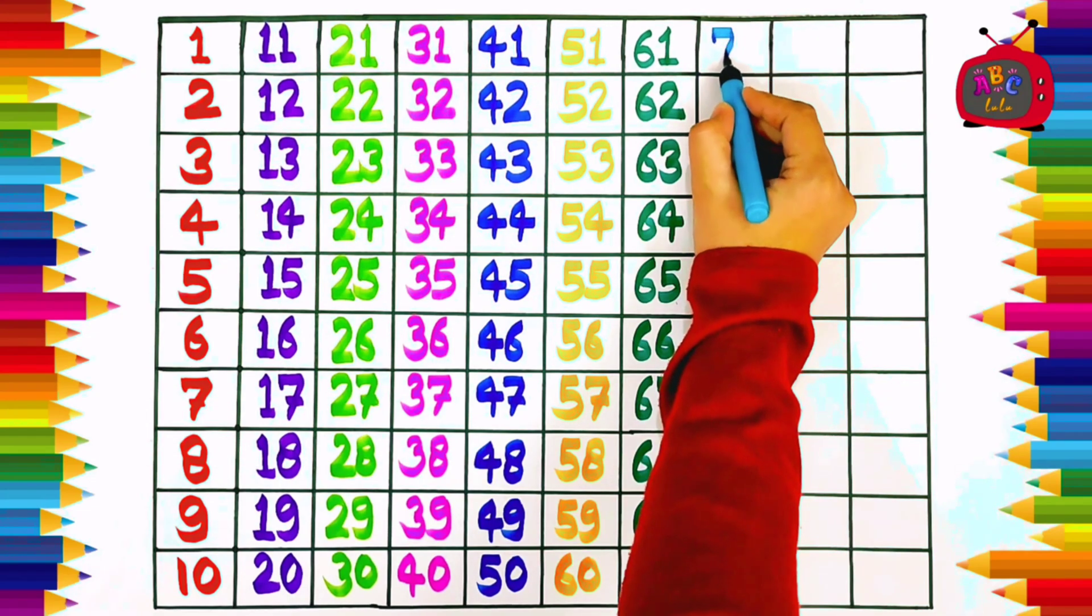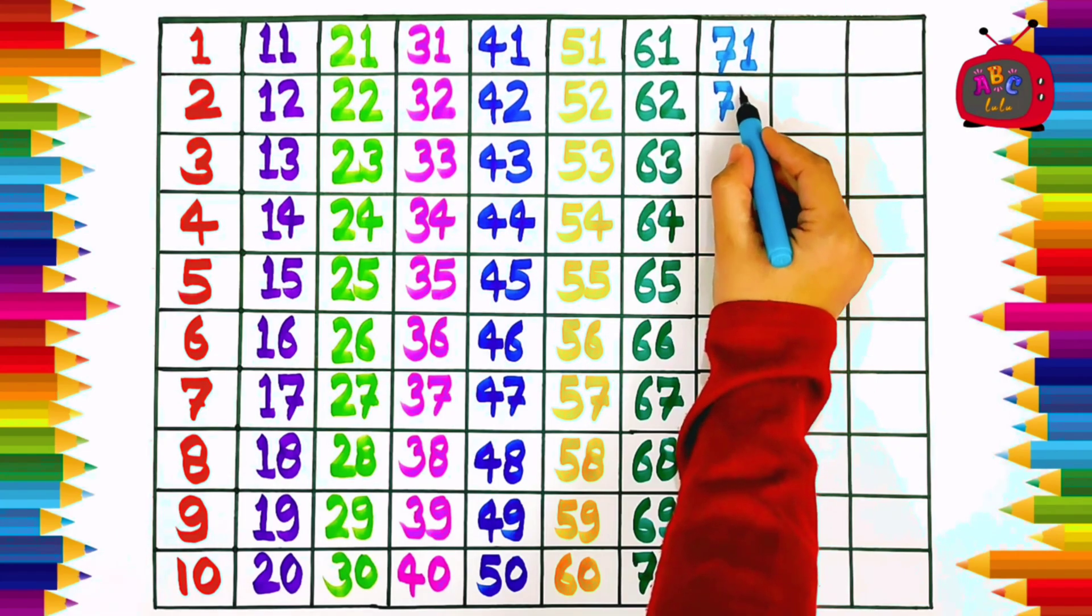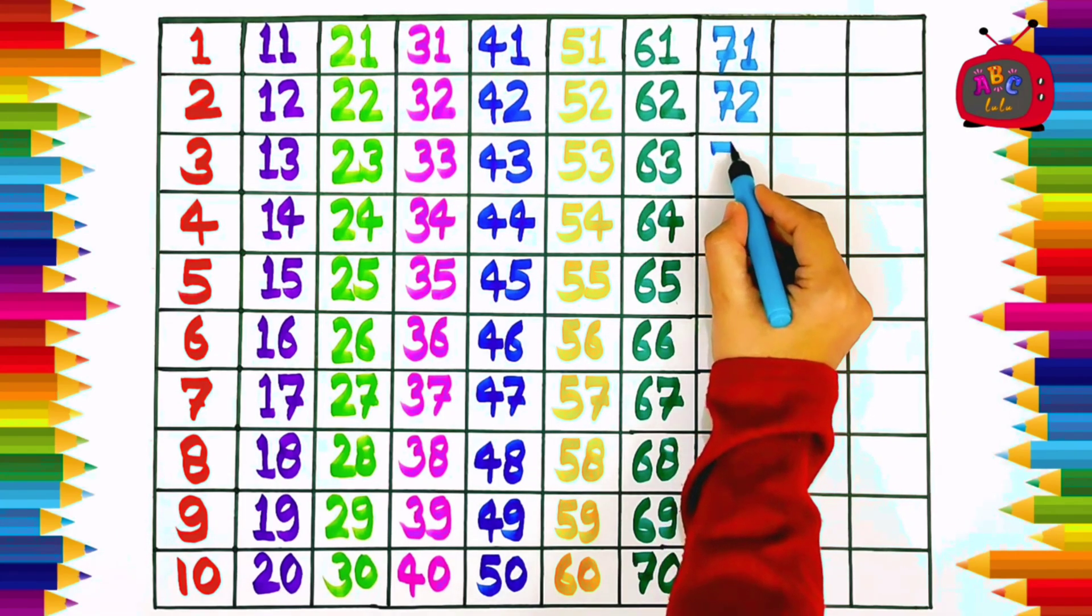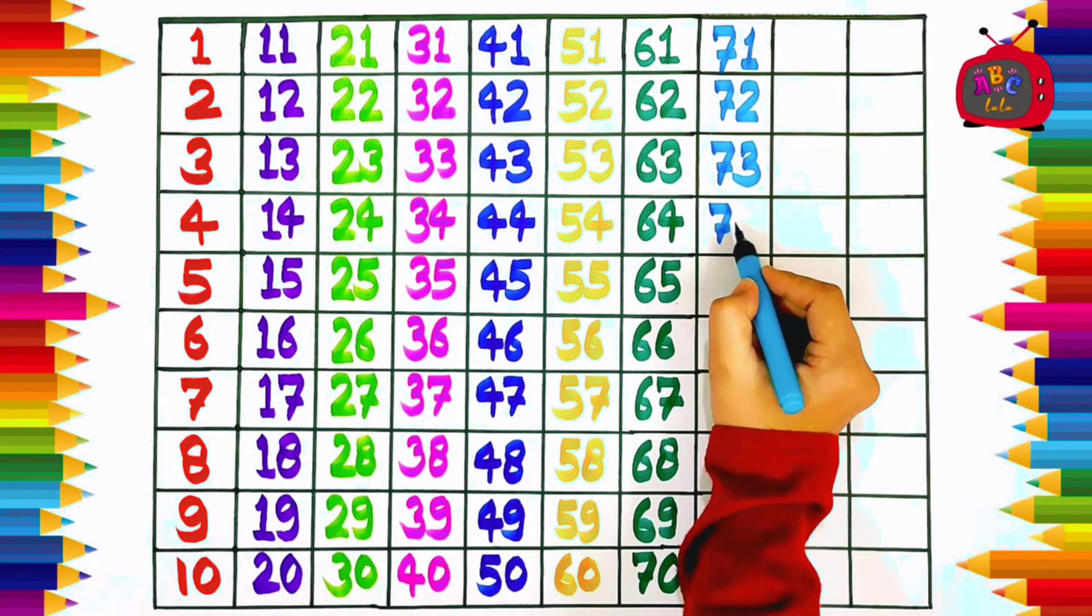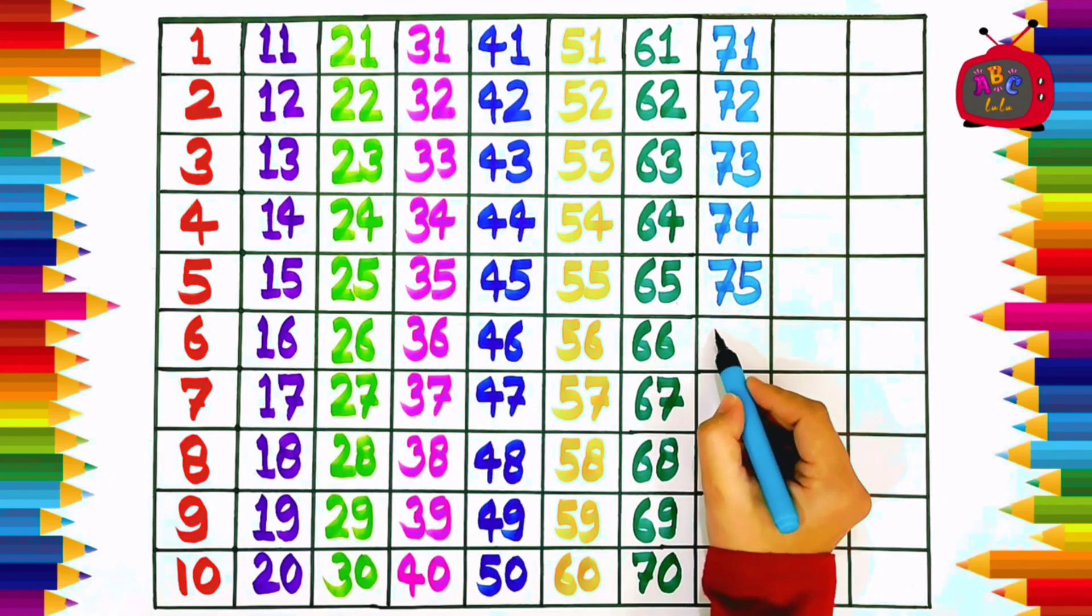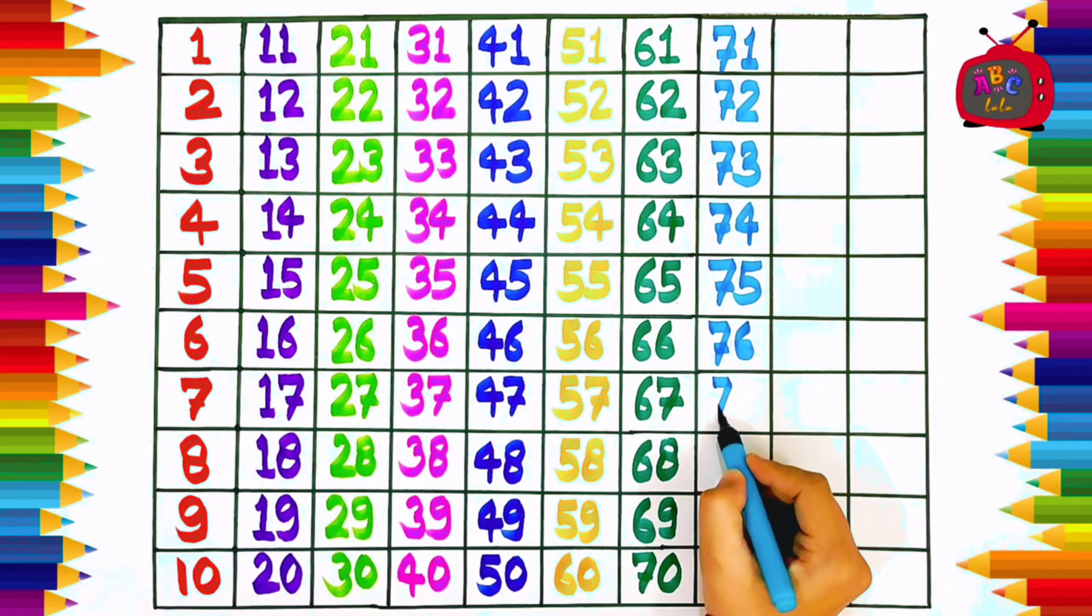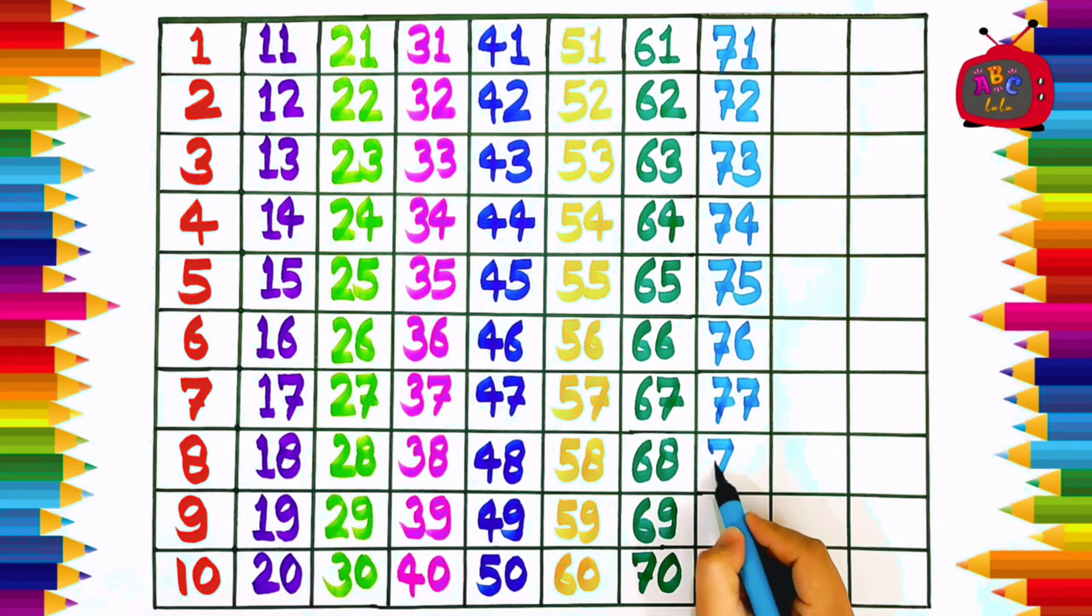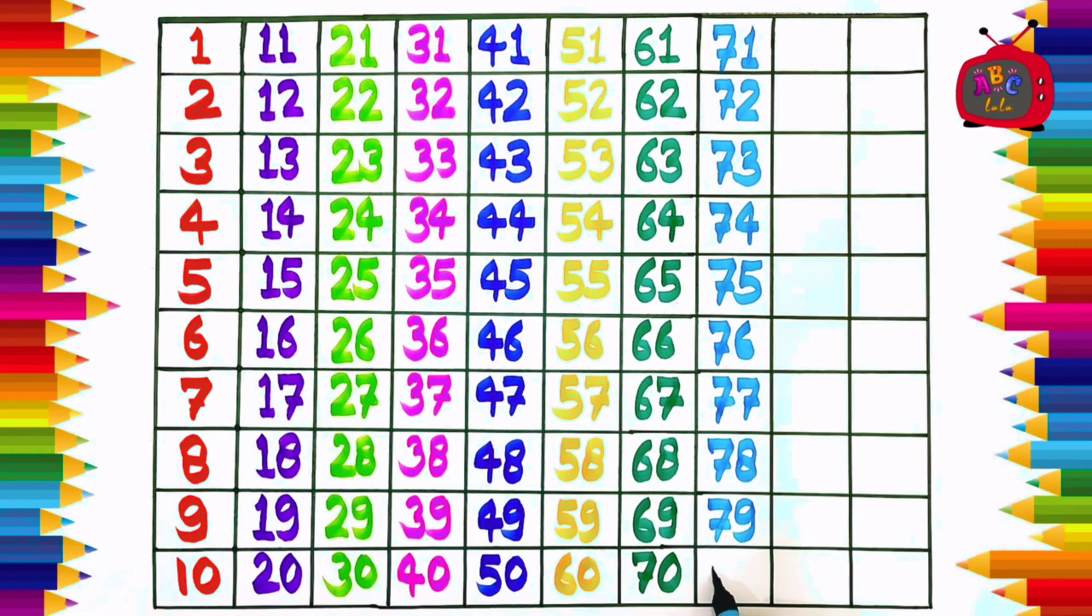Seven one, seventy-one. Seven two, seventy-two. Seven three, seventy-three. Seven four, seventy-four. Seven five, seventy-five. Seven six, seventy-six. Seven seven, seventy-seven. Seven eight, seventy-eight. Seven nine, seventy-nine. Eight zero, eighty.